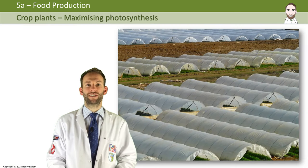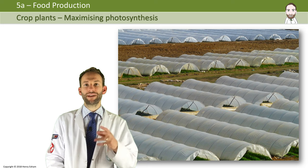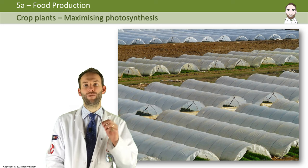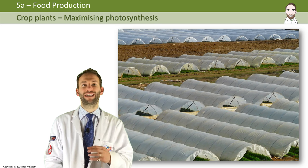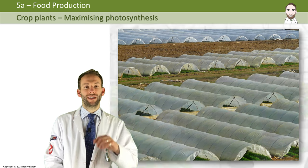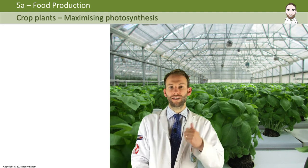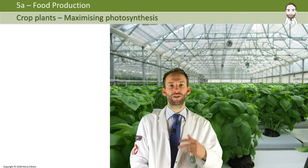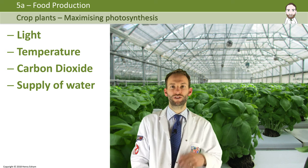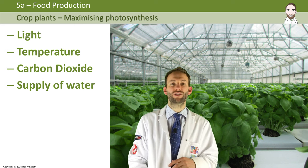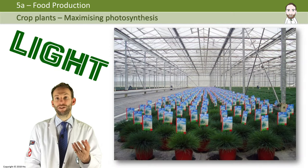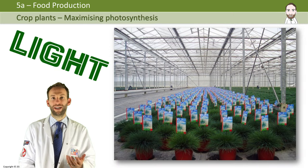To start with, let's look at how you can maximize photosynthesis. The best way to control conditions is to grow crops in a polytunnel or a greenhouse, because then all the conditions can be controlled by the farmer. The farmer can control light, temperature, carbon dioxide, and water supply, regardless of what time of year it is and what's going on in the outside environment.